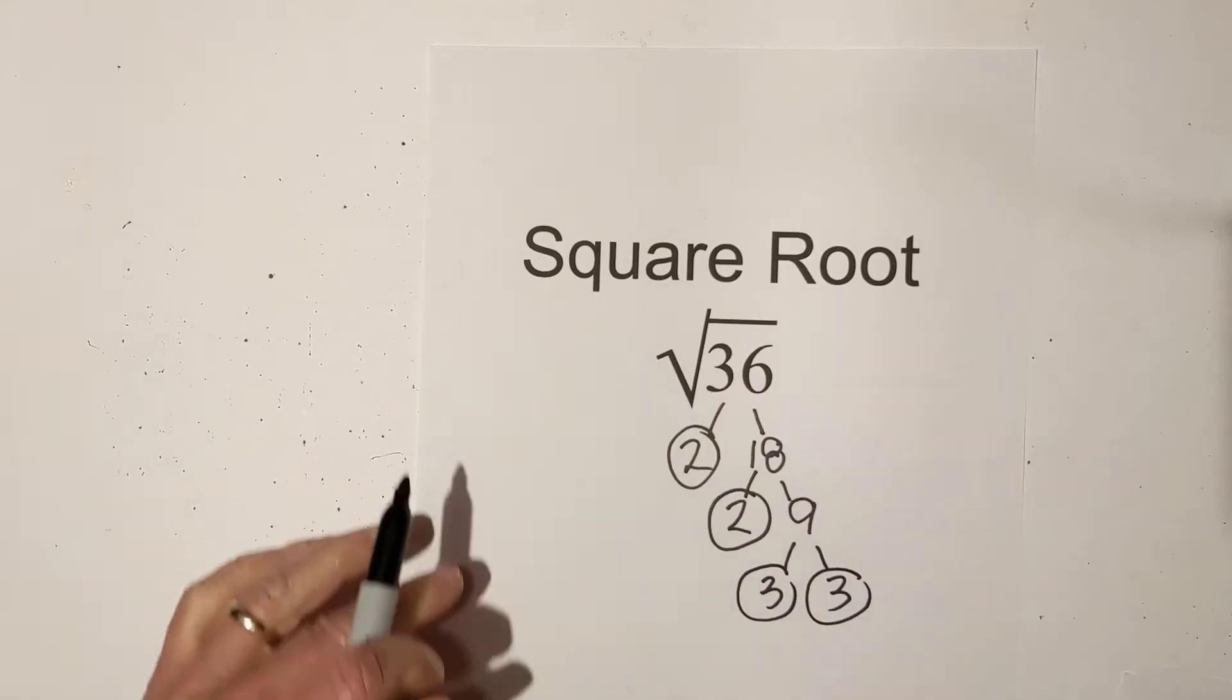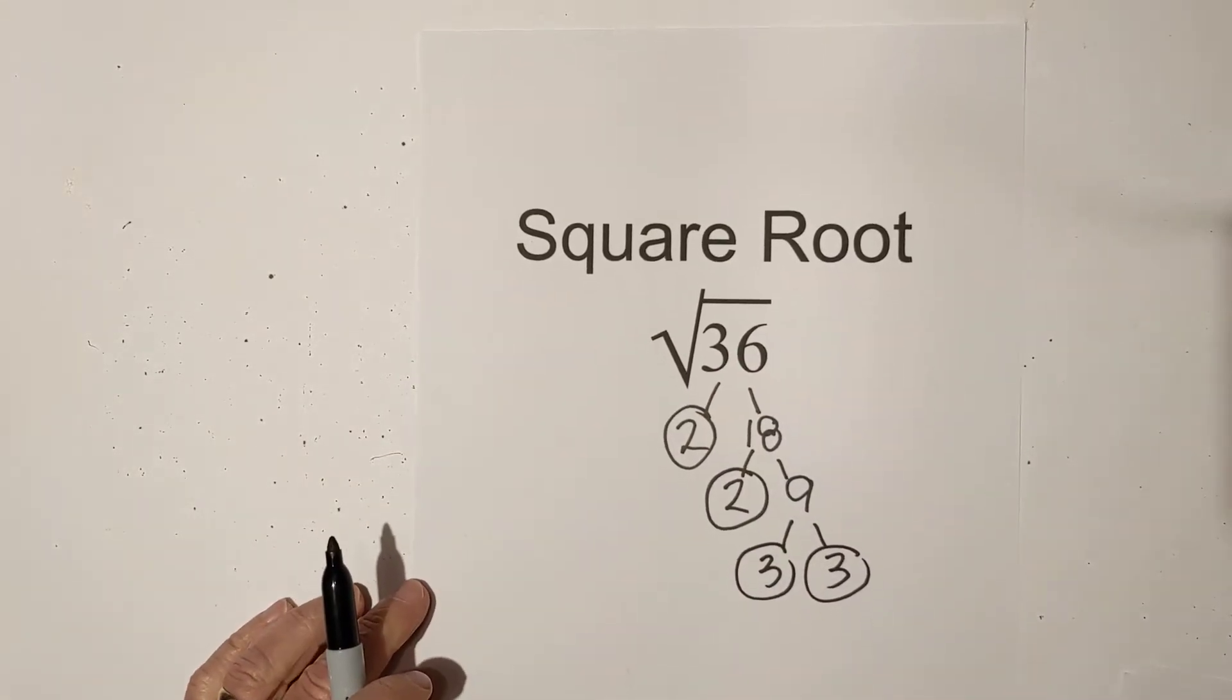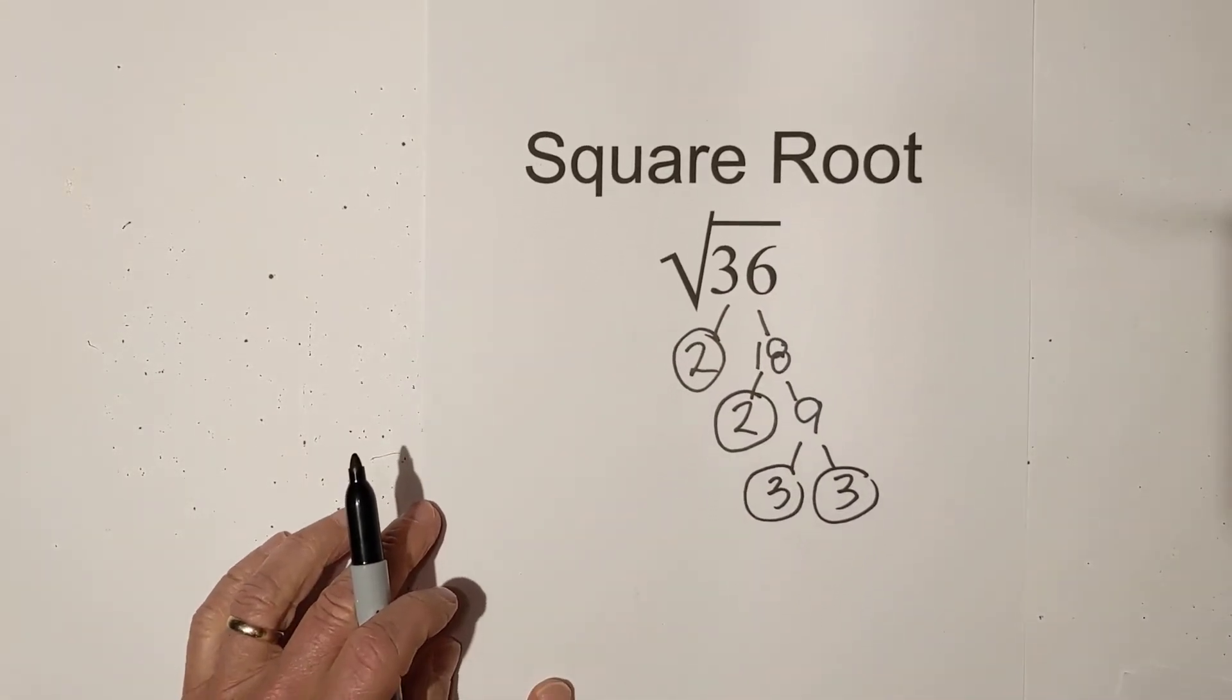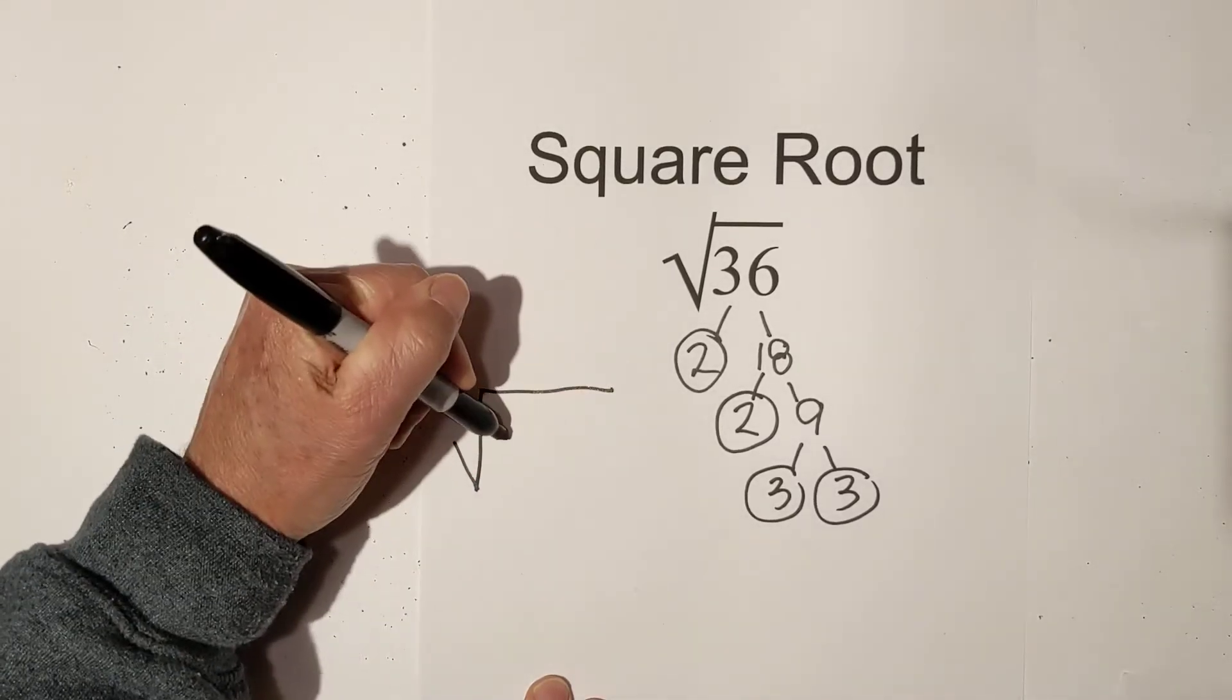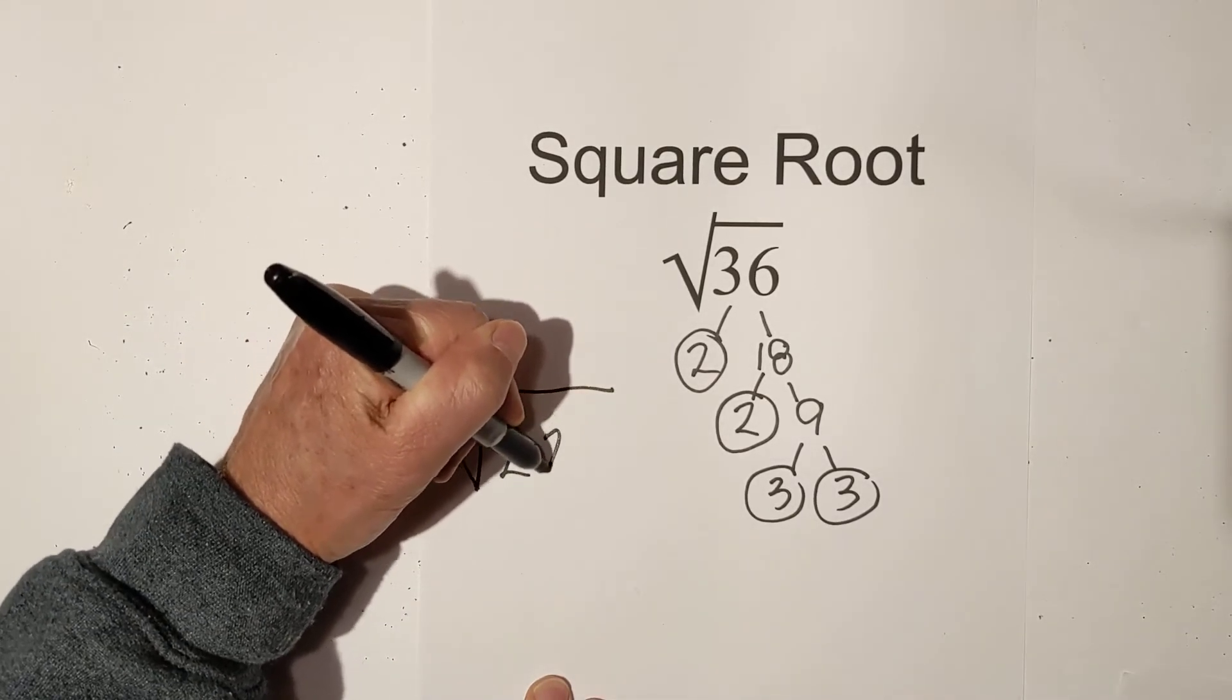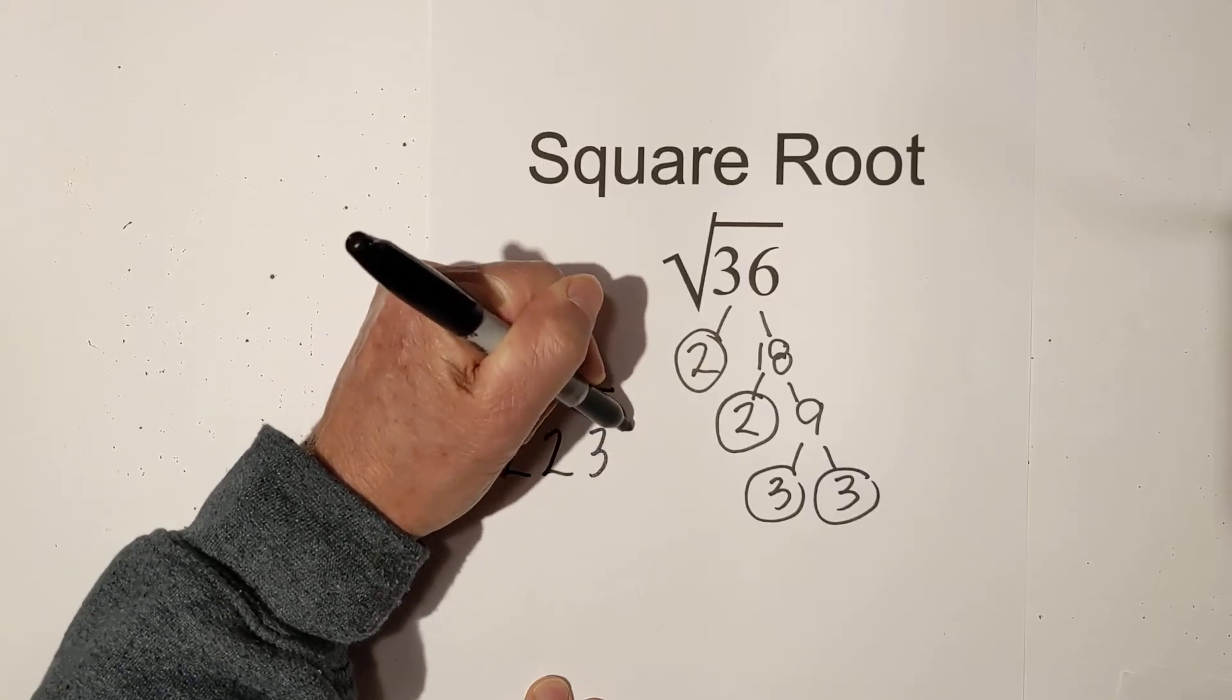So now I will write all of these prime factors. I'll move this up under the square root sign. So we have a two, a two, a three, and a three.